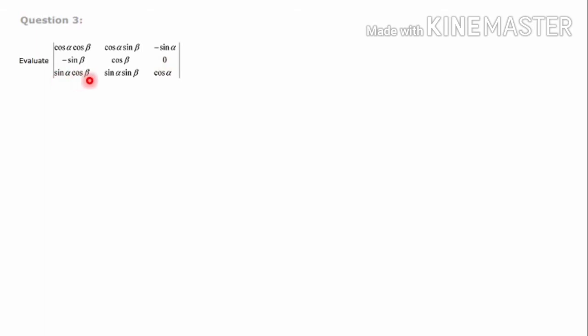Moving on to question number 3. The question is: evaluate the determinant with row 1: cosα cosβ, cosα sinβ, -sinα; row 2: -sinβ, cosβ, 0; row 3: sinα cosβ, sinα sinβ, cosα. We have to find the value of this determinant. Observing the determinant, the third column has a zero element, so expanding along the third column will make calculation easier.